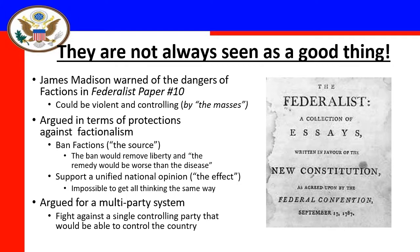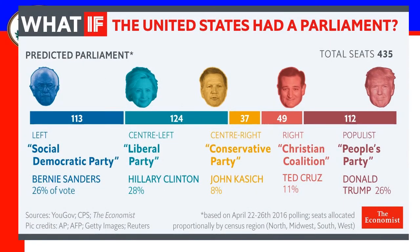The problem is that a multi-party system doesn't necessarily create unity. If the United States had a multi-party system — similar to the English parliament or Germany — there would be many different parties. You can see what this would look like based on the 2016 election results: the far-left Social Democratic Party led by Bernie Sanders getting 26% of the vote, and the far-right People's Party represented by Donald Trump getting roughly 20% of the vote.